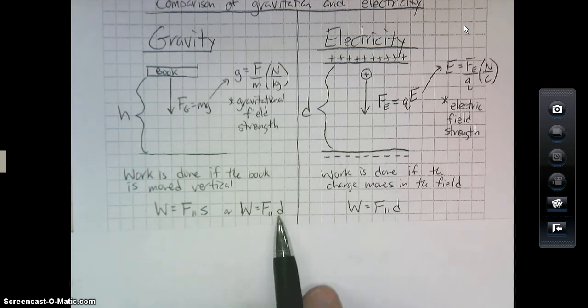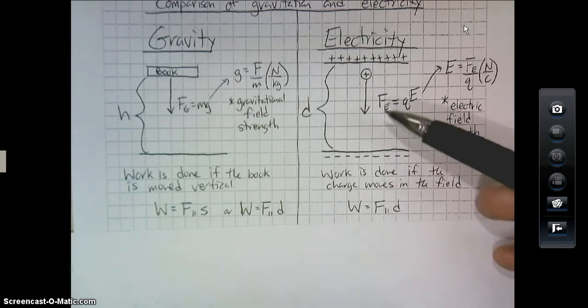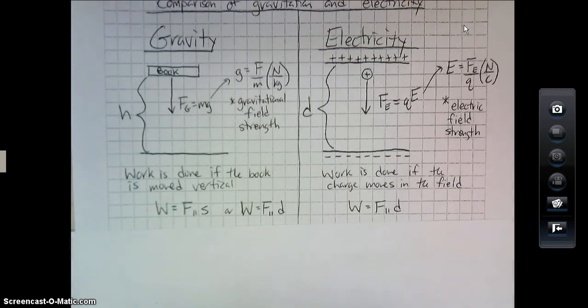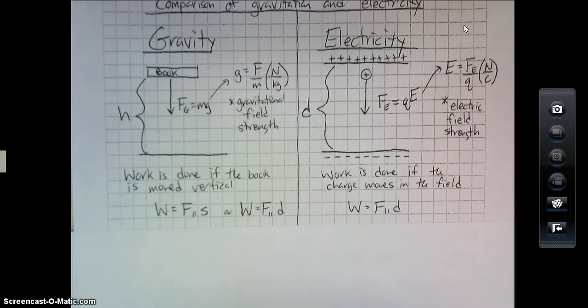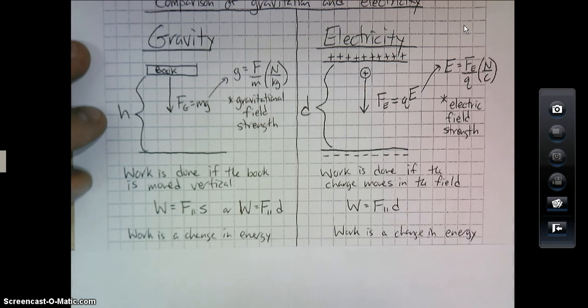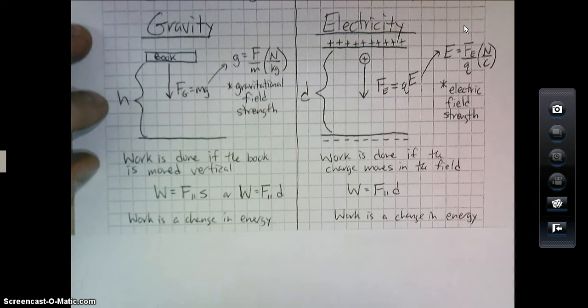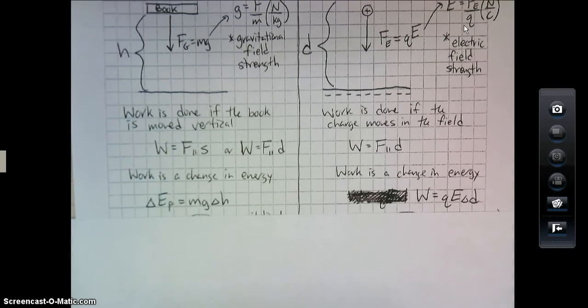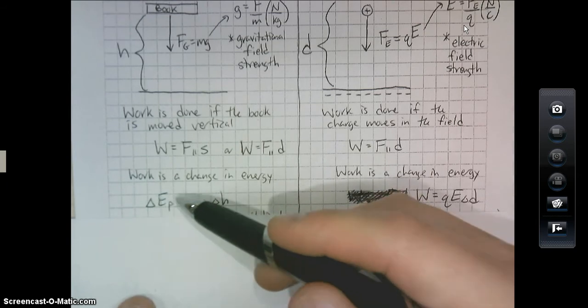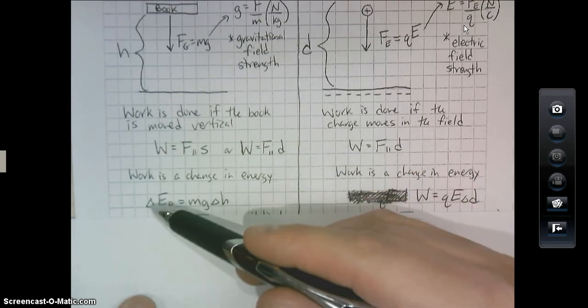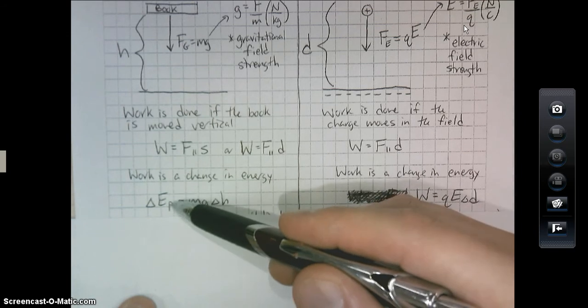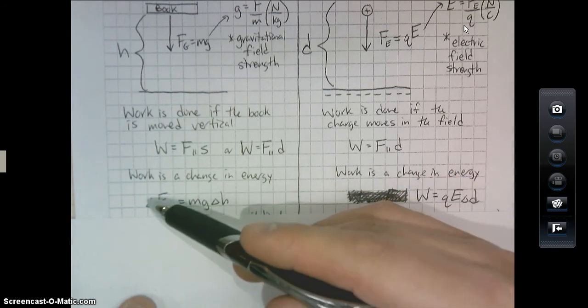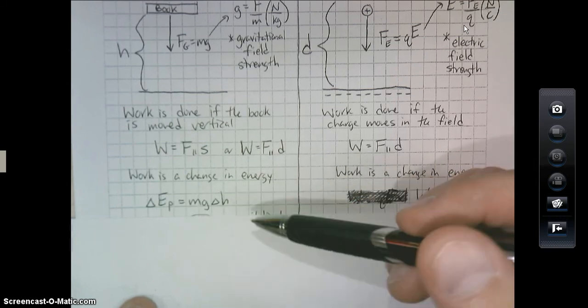Now, we've got some basic formulas for work. Now I've written the IB version here, F parallel to S, or the AP version, or just regular physics version. Work is the force parallel to the displacement. Same thing. It doesn't really make a difference. But no matter what, if it moves parallel to its field, then we're having work done. So work is also defined as a change in energy. But what is the type of energy that's changing here in both cases? In the gravity's case, if you move in that gravitational field, then your gravitational potential, so for IB it's EP, AP it's UG. Your gravitational potential is changing. Which is equal to MGH.